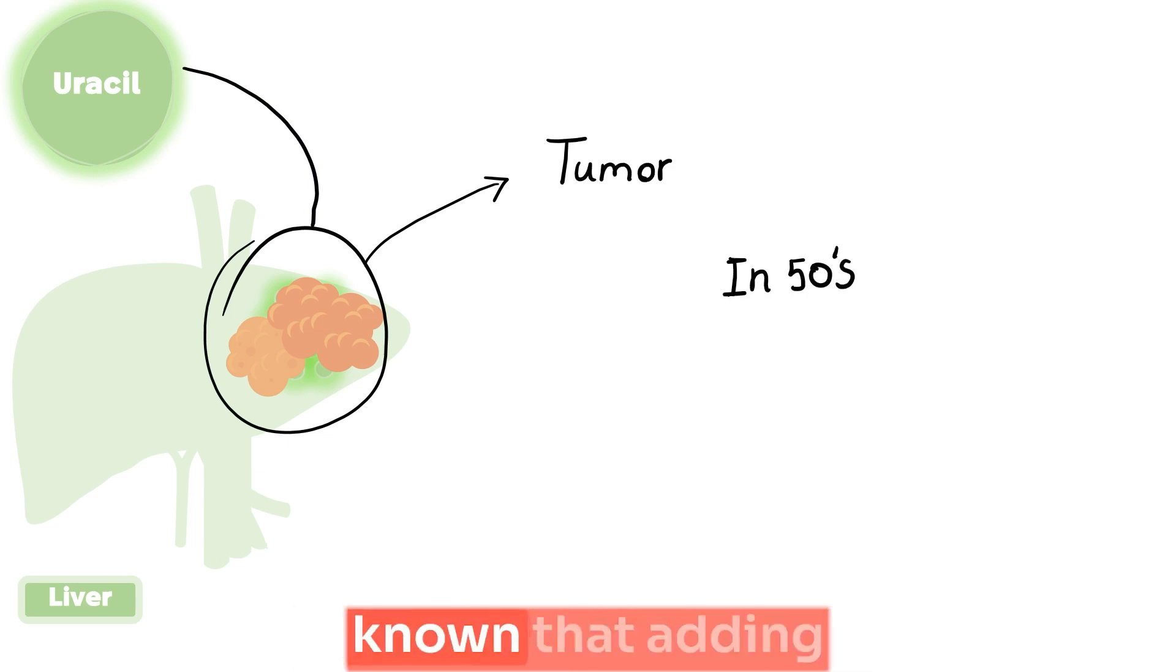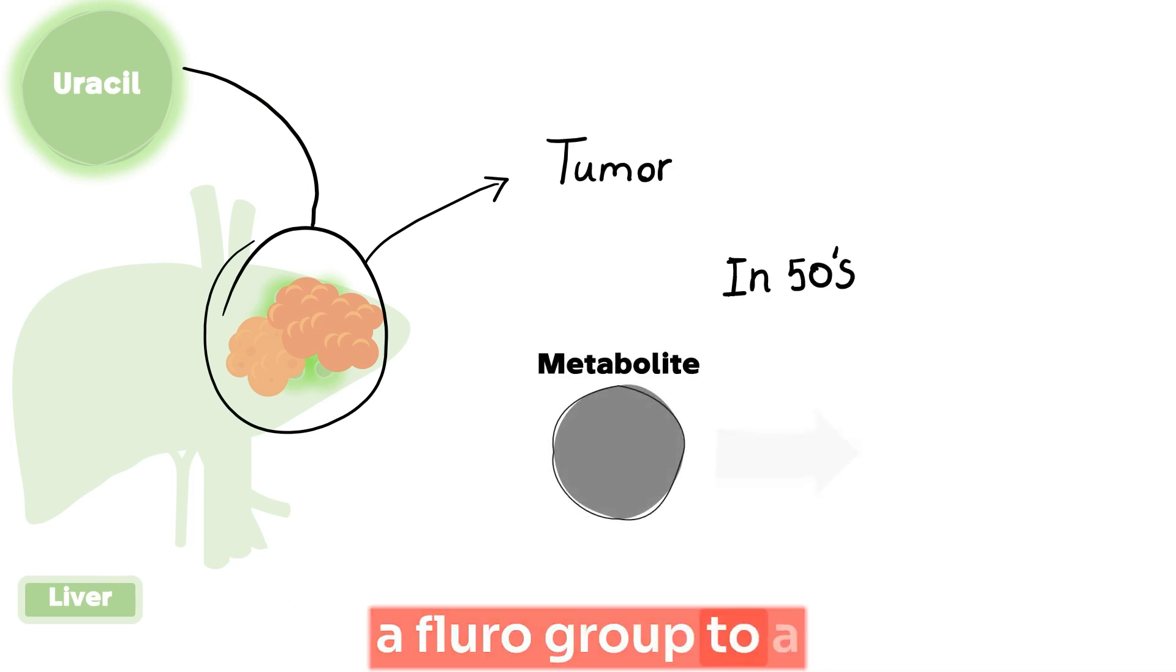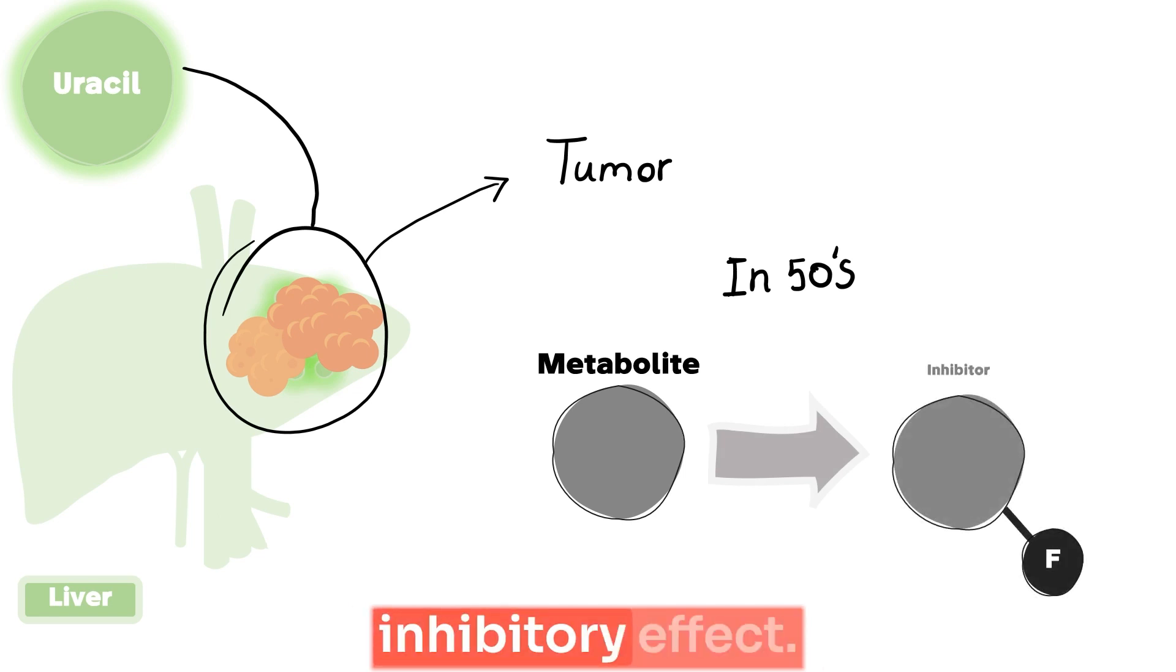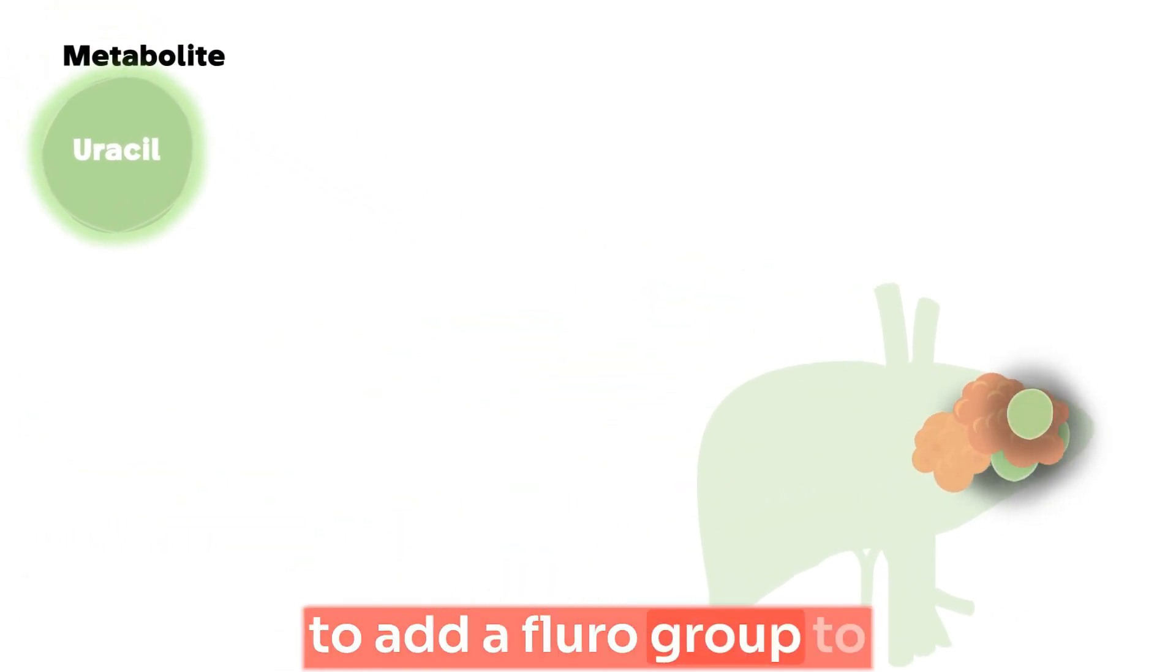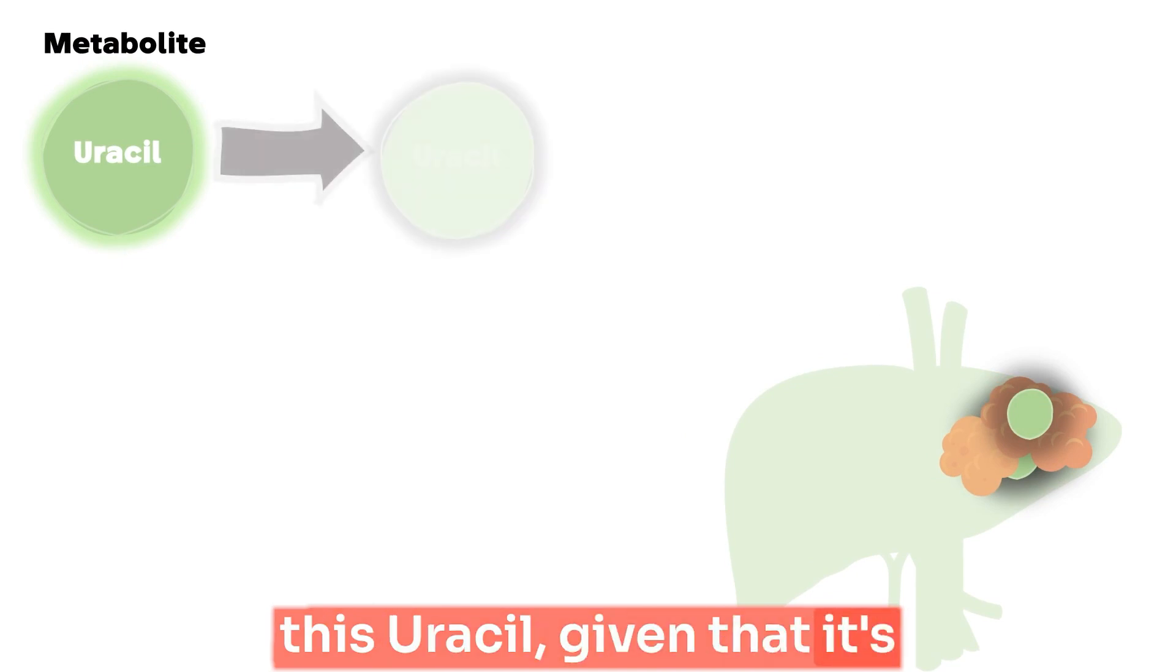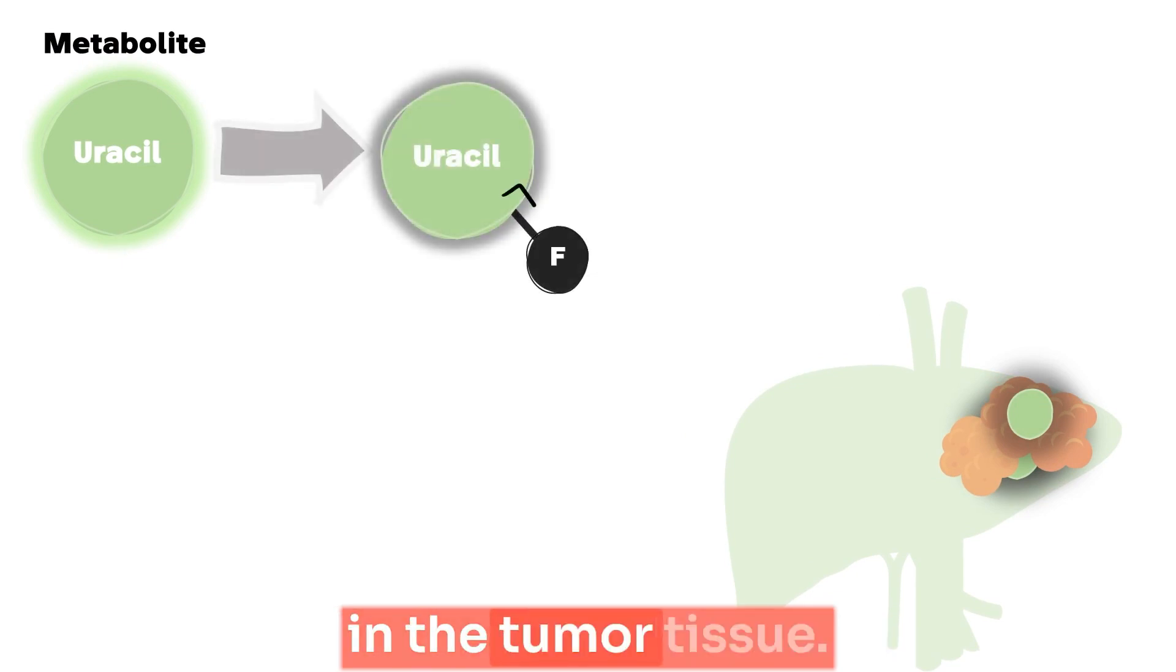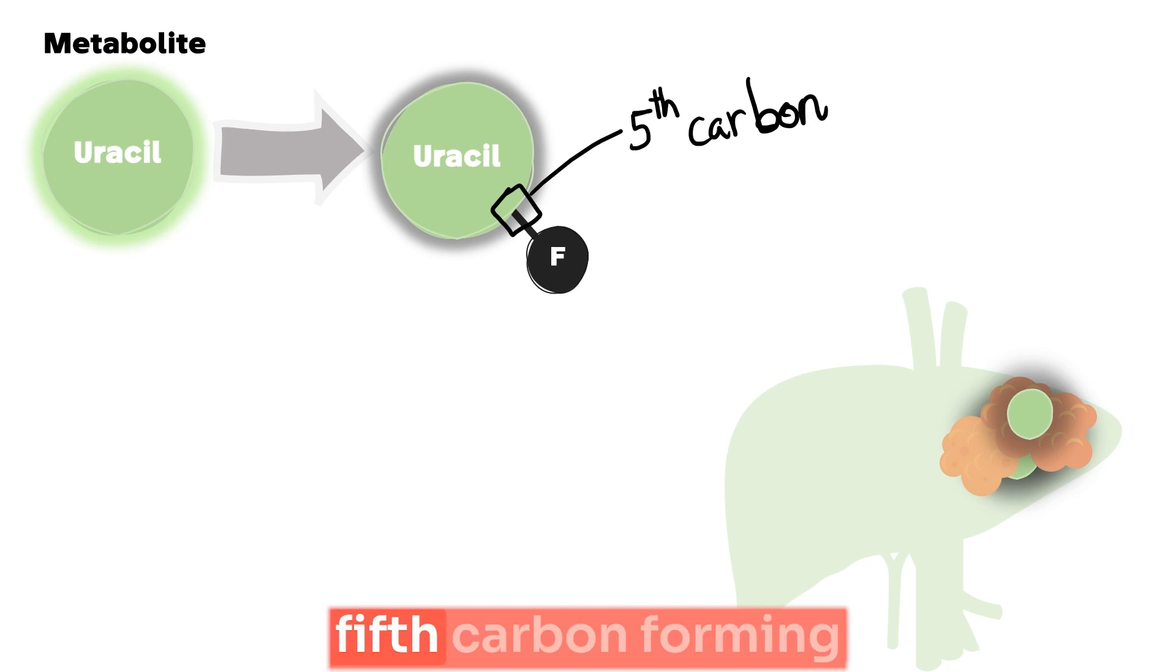Back then, it was well known that adding a fluoro group to a metabolite had an inhibitory effect. However, how specifically this inhibition can take place was not known at this time. They thought of why not to add a fluoro group to this uracil, given that it's specifically absorbed in the tumor tissue. They added on the fifth carbon, forming five fluoro uracils.